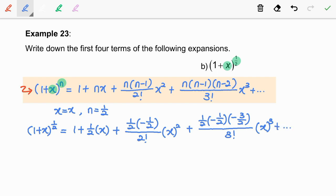Now, we have to simplify this expression. So we got 1 plus 1 over 2x minus 1 over 8x squared plus 1 over 16x cubed plus dot dot dot as our final expansion. Well, that's it. Thank you.